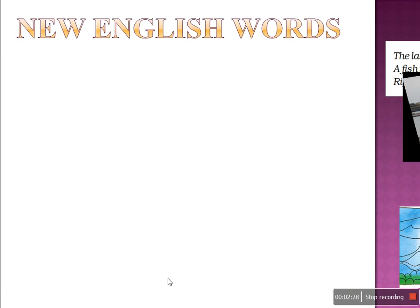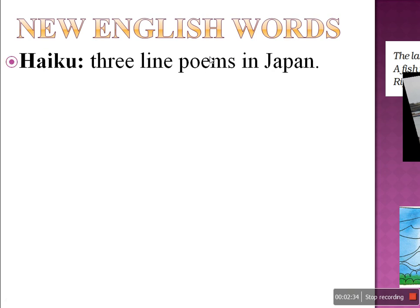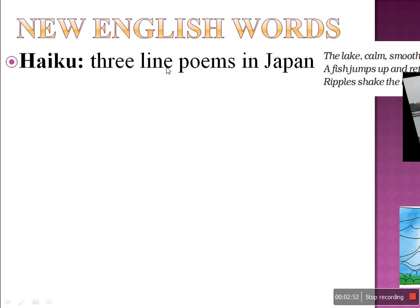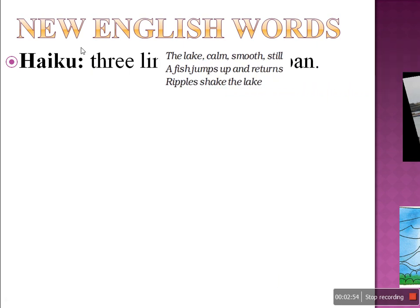So let us first learn a few English words. First: Haiku — three line poems in Japan. Haiku is a three line poem used in Japan. Like we have Doha, which is a couplet meaning two line poems, in Japan they have three line poems called Haiku. Generally, Haiku is related to natural things.